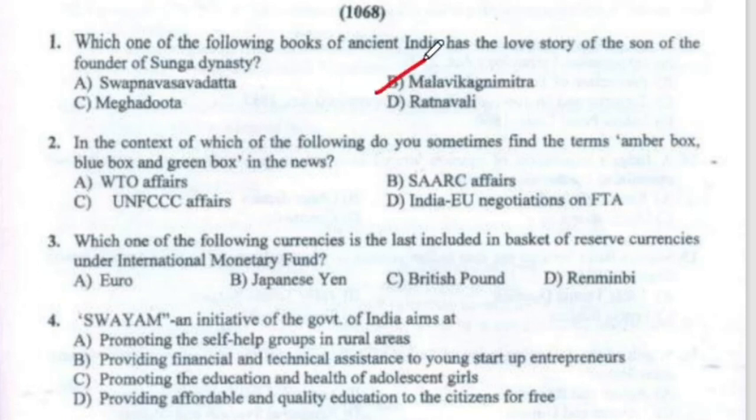Question 2: In the context of which of the following do you sometimes find the terms amber box, blue box and green box in the news? The answer is World Trade Organization Affairs.